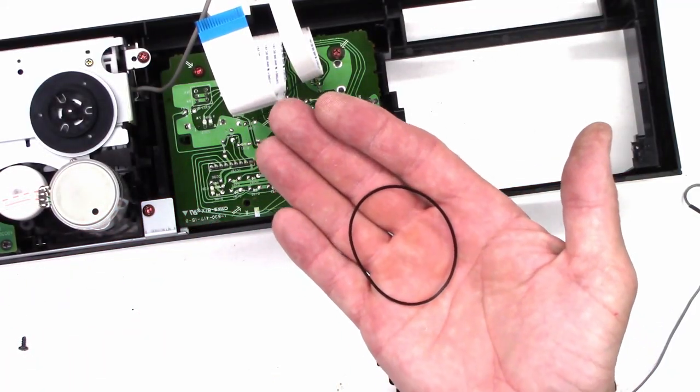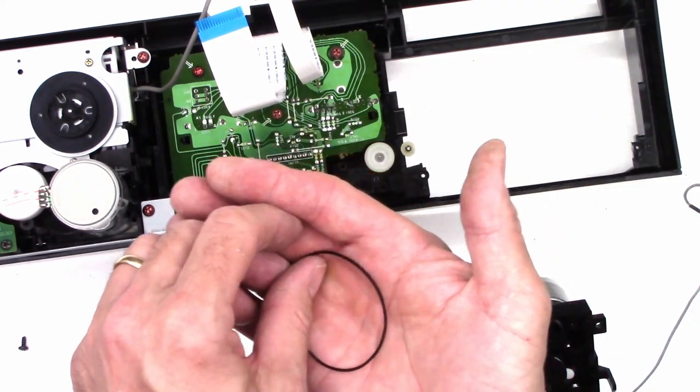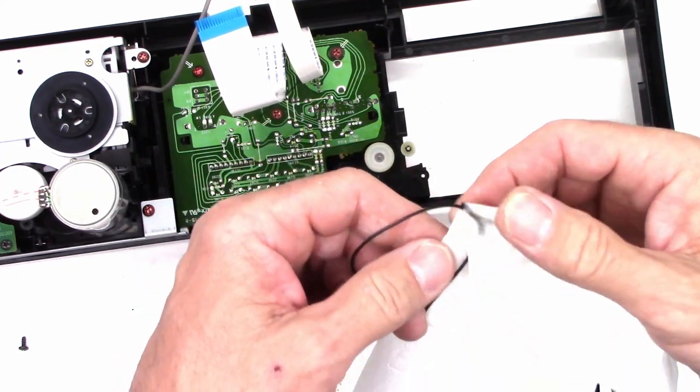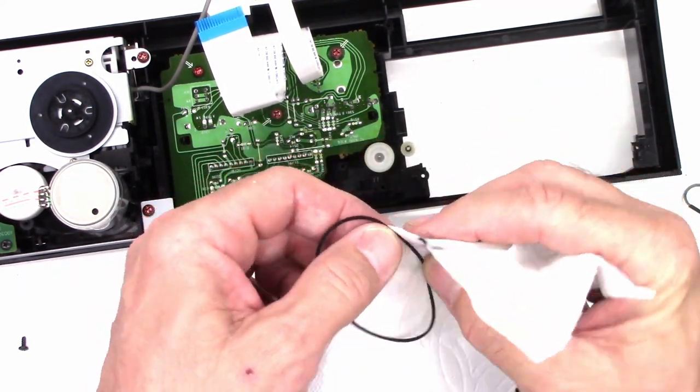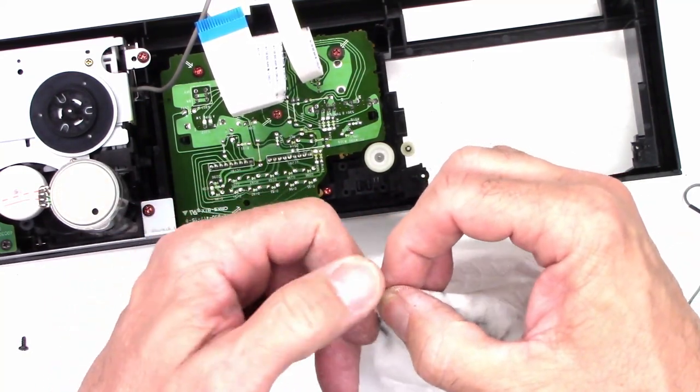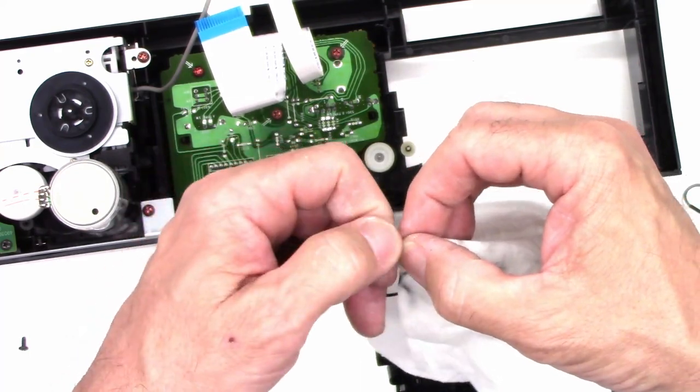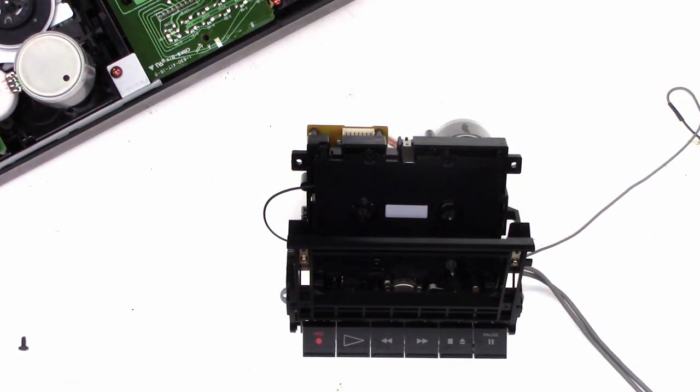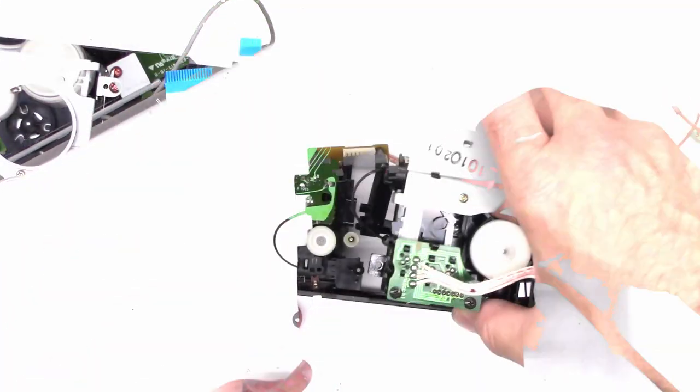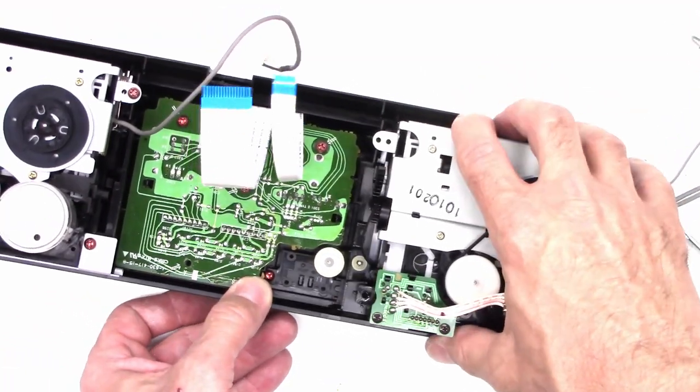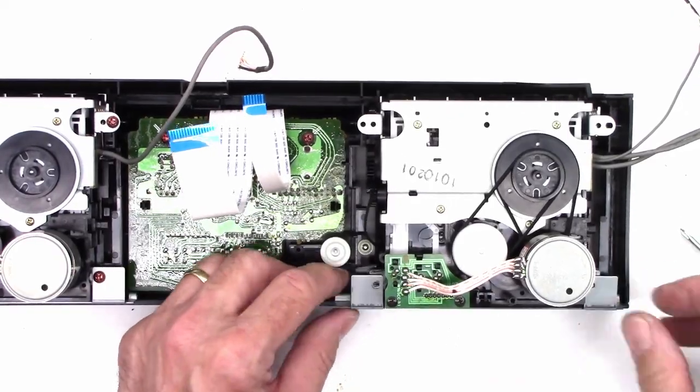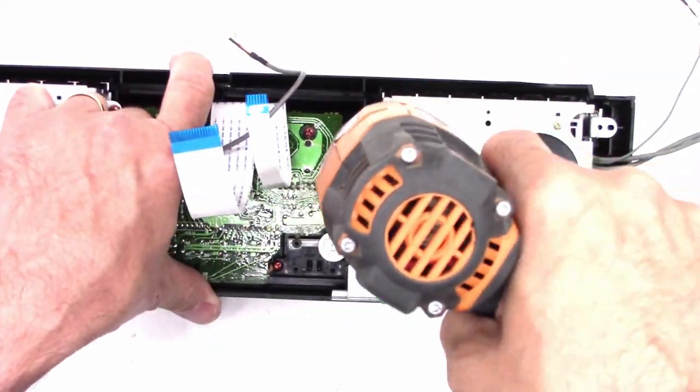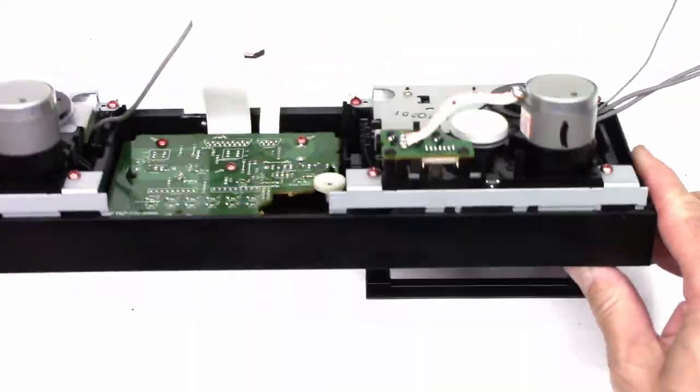So I still have to clean the one belt that was not damaged, the counter belt. So this belt drives the mechanical counter. We'll give it a couple of cleanings, make sure it's all oil free. This will help the belt last many more years. Alright, the belt's on, we'll go ahead and put the cover back on it now. Alright, deck one is done.